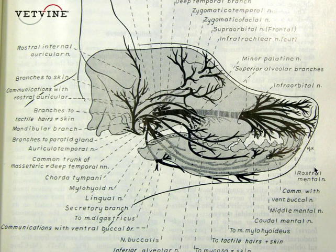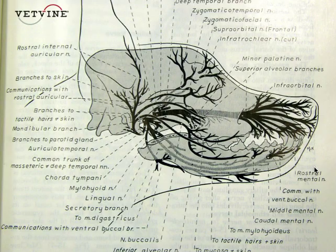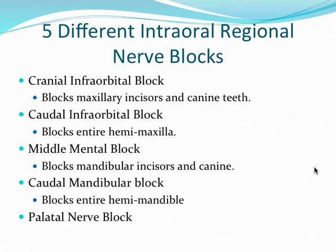Essentially, there are five of them: the cranial infraorbital block, the caudal infraorbital block, the middle mental block, and the caudal mandibular block. We're going to go through each of these.